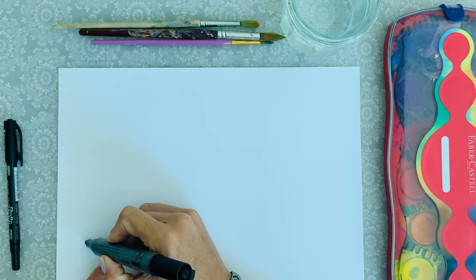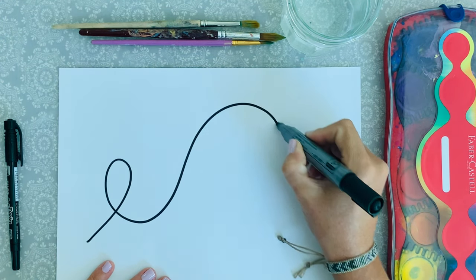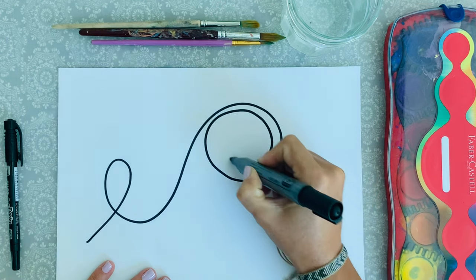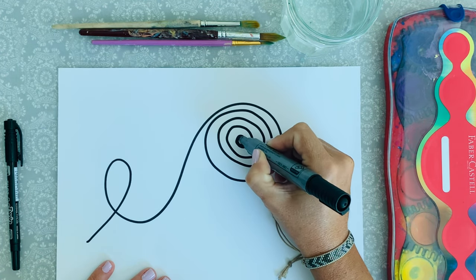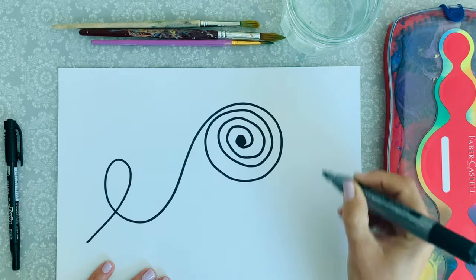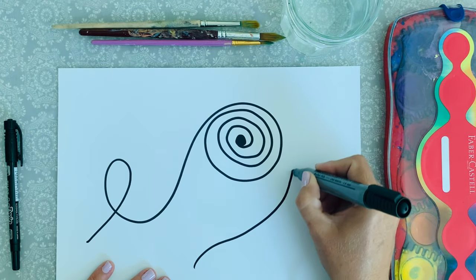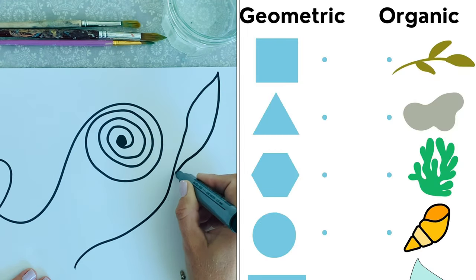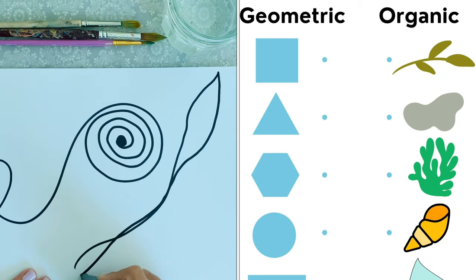So remember, in this activity there is no right or wrong. You are simply going to use your black marker and draw shapes and lines on the page as you wish — just drawing from your subconscious mind. Remember, Miró used lots of organic lines and shapes. Organic shapes are the shapes that are found in nature, like the shape of a teardrop or the shape of a leaf.